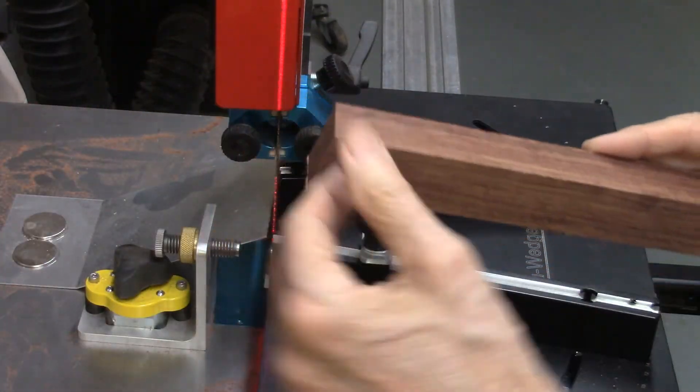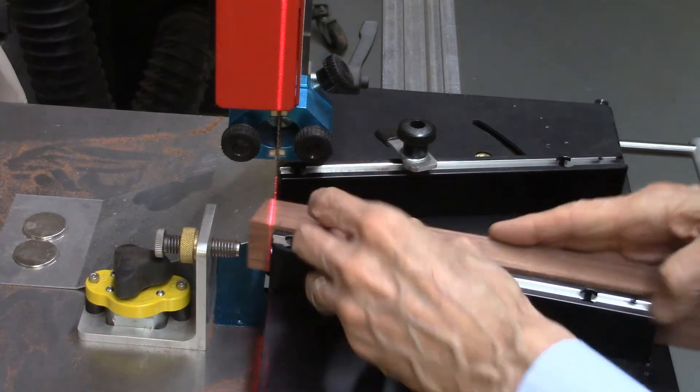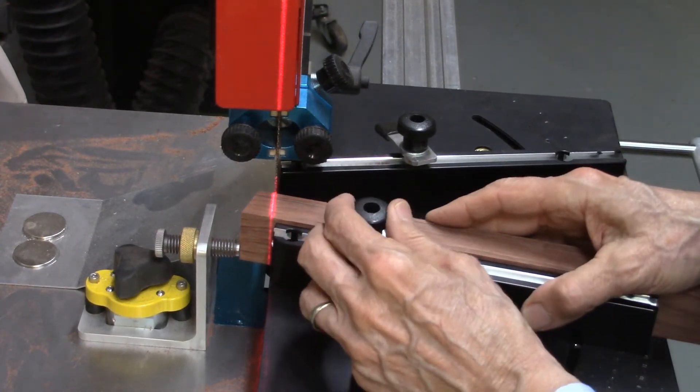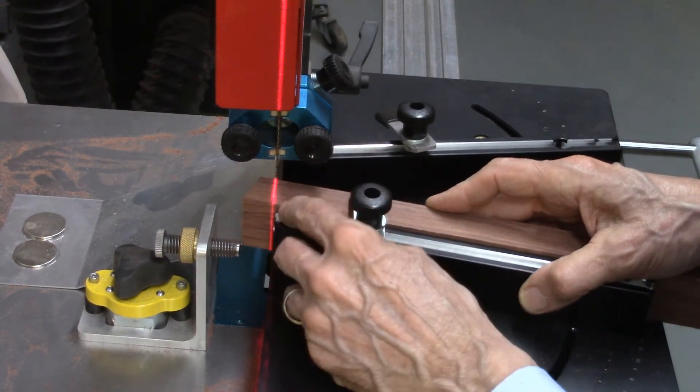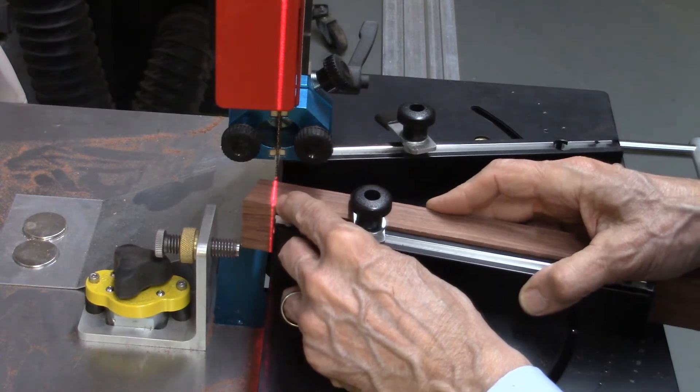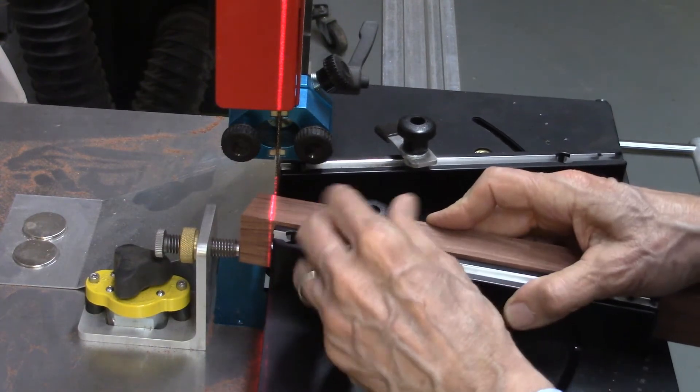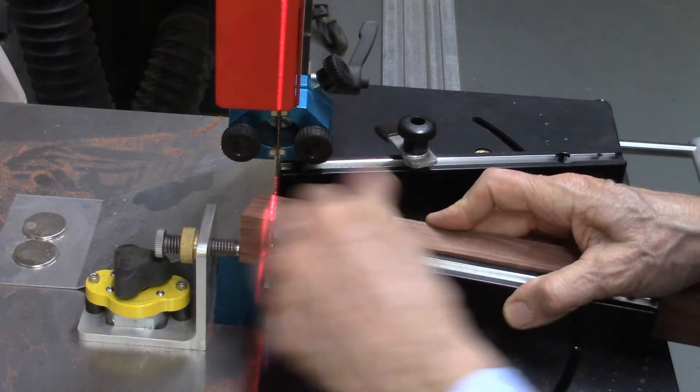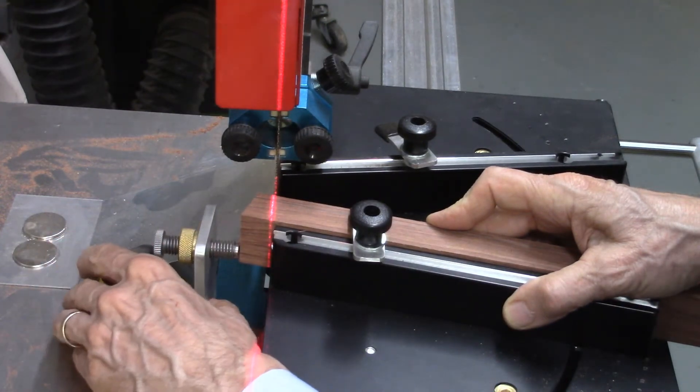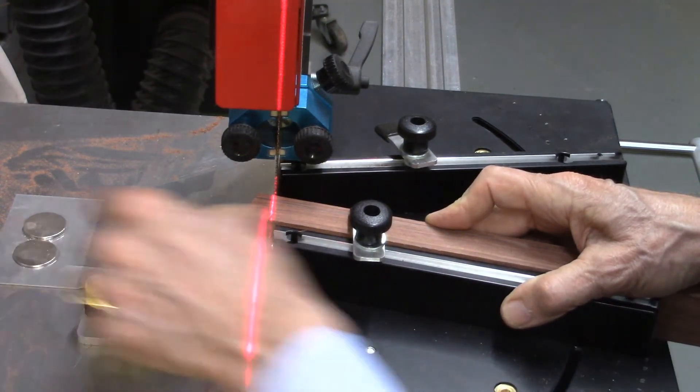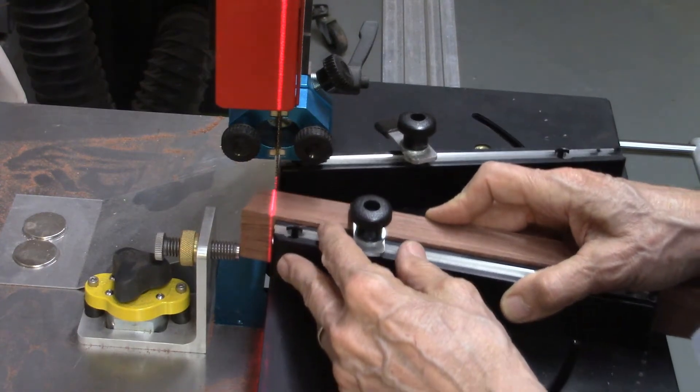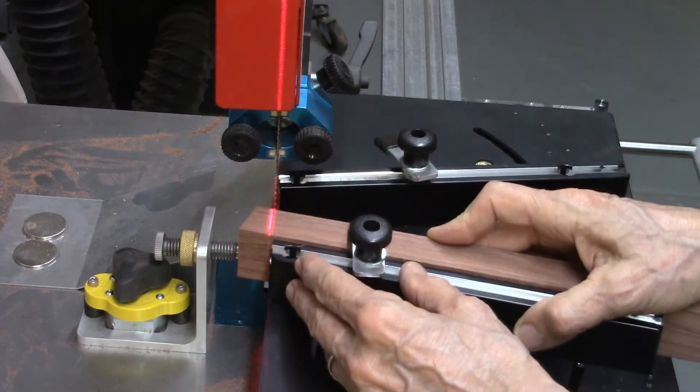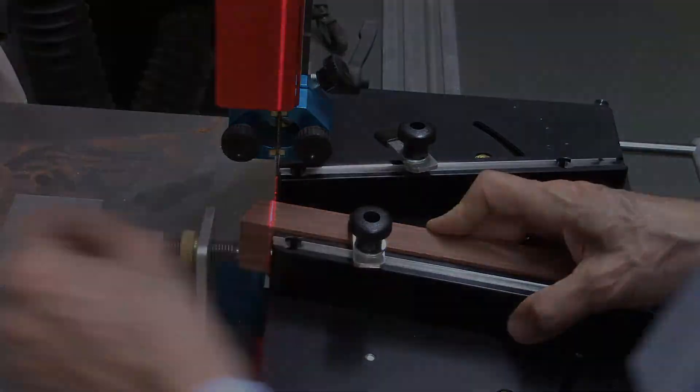I already made my first cut on the board, so now I'll put this back in the bandsaw on the accu wedge and I'll align the laser beam such that it just hits on the edge of that line. I'll adjust my stop so all my boards will be exactly the same length and then we're ready to start cutting our wedges.